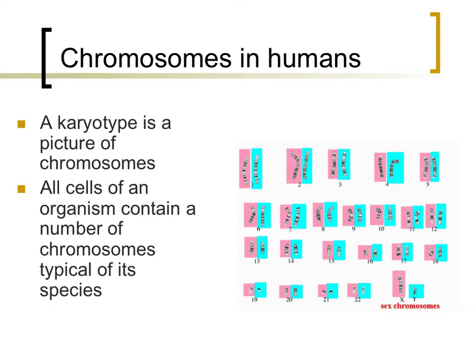A karyotype is a micrograph of all of an individual's chromosomes. An example of a karyotype is shown on the right. Humans typically have 46 chromosomes. Some individuals possess fewer or more chromosomes than are typical. Disorders that result from these differences will be discussed in the next unit on genetics. These 46 chromosomes are, in essence, 23 pairs — 23 chromosomes from an individual's mother and 23 from their father. All of the blue chromosomes in the picture came from this individual's father, while all of the pink chromosomes came from the individual's mother.